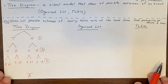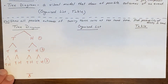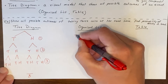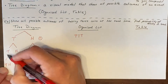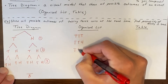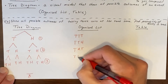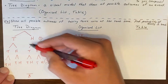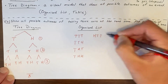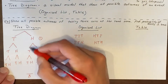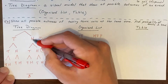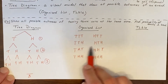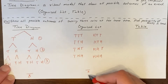For the organized list, we take the tree diagram information and name each possible outcome. If the first coin was tails: TTT, TTH, THT, THH. If the first coin was heads: HTT, HTH, HHT, HHH. That's our organized list, and once again we can see there are eight possible outcomes.